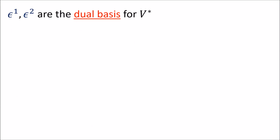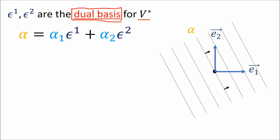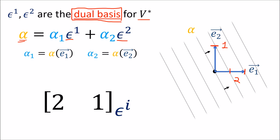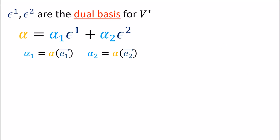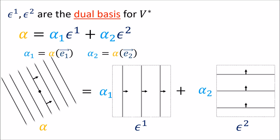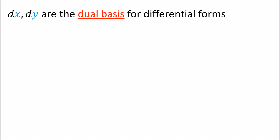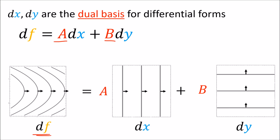Recall that the epsilon covectors ended up being the dual basis for the space of all covectors, so any arbitrary covector alpha can be written as a linear combination of epsilon1 and epsilon2, where the components are the number of lines each basis vector pierces. Just as epsilon1 and epsilon2 form a basis for all covectors, dx and dy form a basis for all differential forms. So if we pick the coefficients properly, we can build the covector field df as a linear combination of dx and dy.